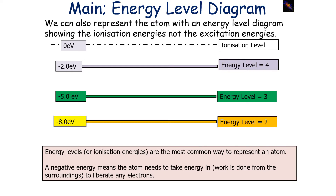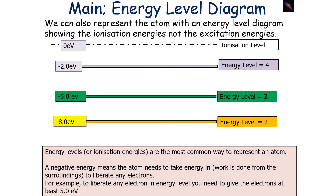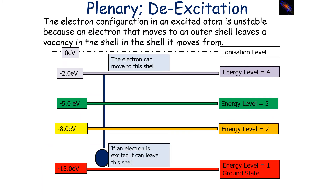Negative energy means that the atom needs to take energy in, or work is done from the surroundings to liberate any electrons. For example, to liberate any electron in energy level 3, you need to give the electrons at least 5 eV. This is an important idea because we can now look at this concept when examining excitation and de-excitation.